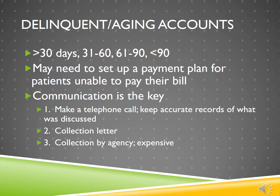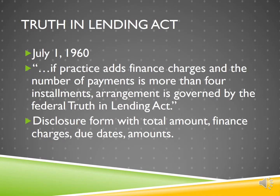Delinquent accounts are known as aging accounts — accounts not being paid either by an insurance company or patient for over 30, 60, 90 days or more. We may need to set up a payment plan for patients unable to pay their balance. Communication is key: make a phone call or send a collection letter. Practice management programs can automatically print and send collection letters. Some very overdue accounts may be sent to a collection agency, although it's very expensive to do this. If a medical biller sets up a payment plan with finance charges and more than four installments, it may fall under the Truth in Lending Act of 1968, requiring disclosure of the total loan amount, finance charges, due dates, and amount of each payment.